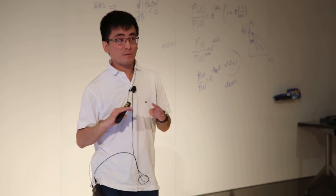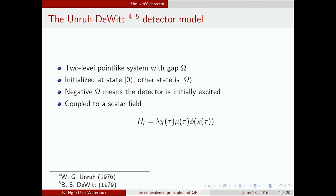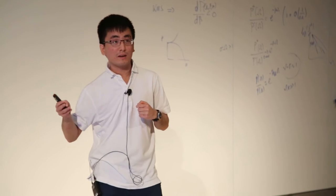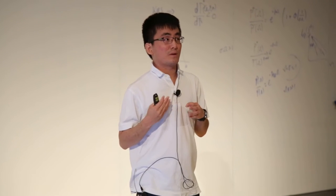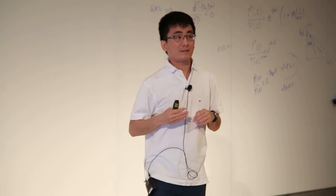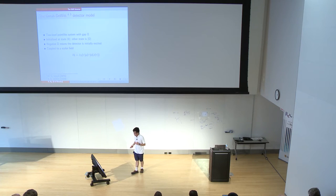The detector model I'll be using today is called the Unruh-DeWitt detector model: a two-level point-like system with gap Omega, initialized at some ground state zero. We allow this gap Omega to take a negative value to indicate that the detector starts excited and goes to the ground state, coupled to a scalar field through the interaction Hamiltonian.